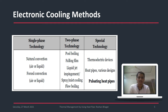Two-phase technologies include pool boiling, falling film, liquid jet impingement, spray cooling, mist cooling, and low boiling. These involve two phases being present. A more recent category is special technology, which uses thermoelectric devices, heat pipes, and pulsating heat pipes.